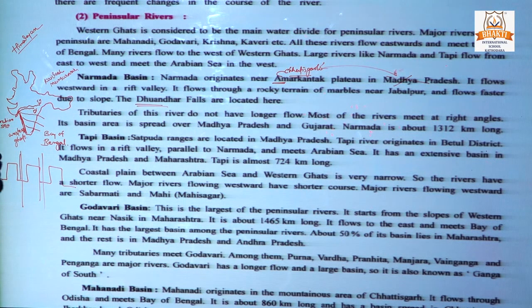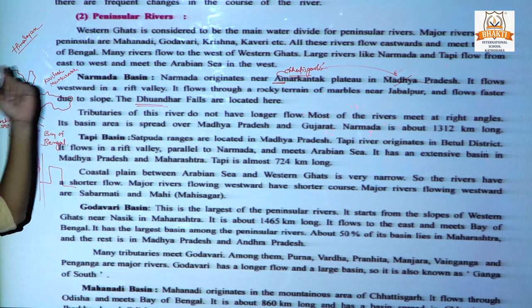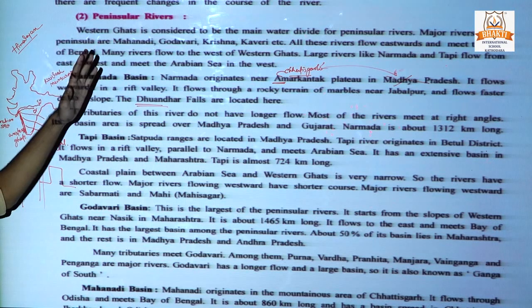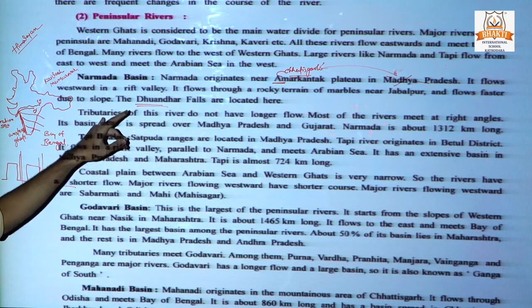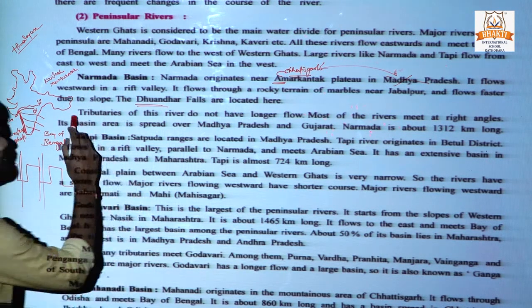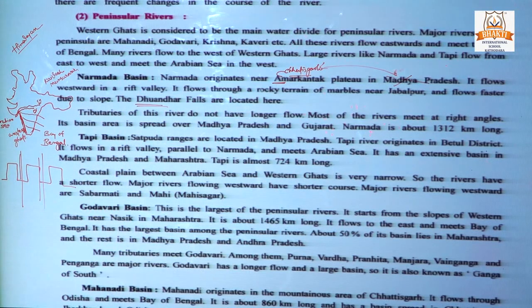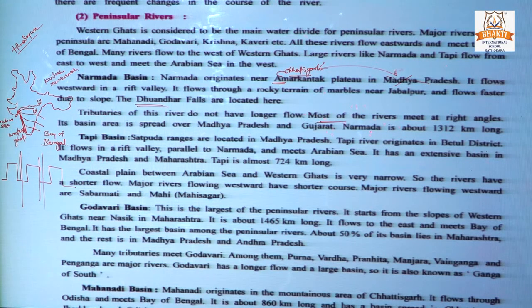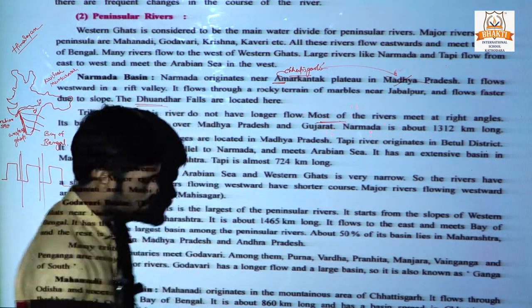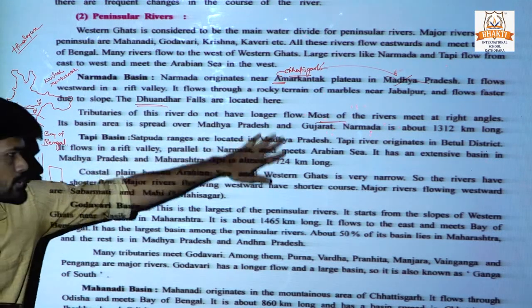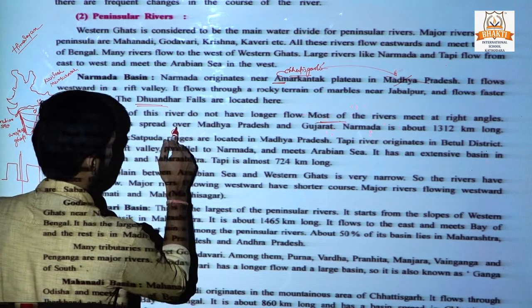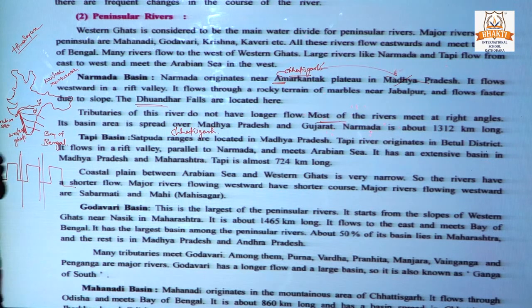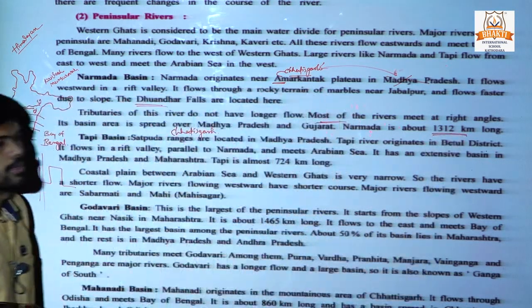Tributaries of the Narmada do not have a longer flow — they are small, unlike Ganga which has one major tributary, Yamuna. Here, the tributaries are very small and do not have a longer flow. Most of the tributaries meet the river at a right angle. Its basin area is spread over Madhya Pradesh and Gujarat.